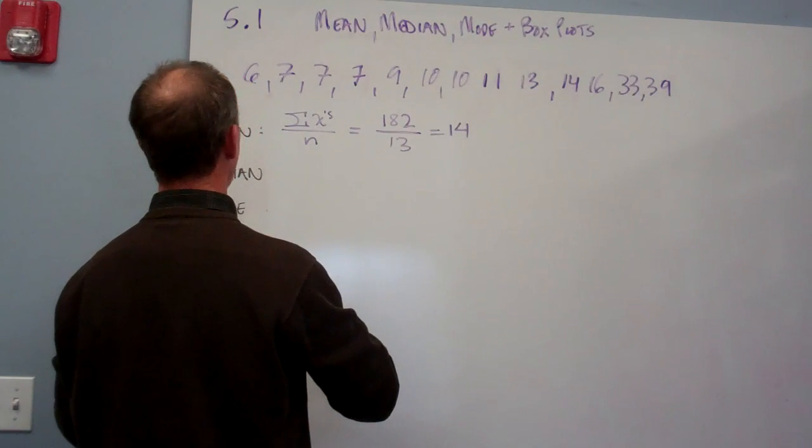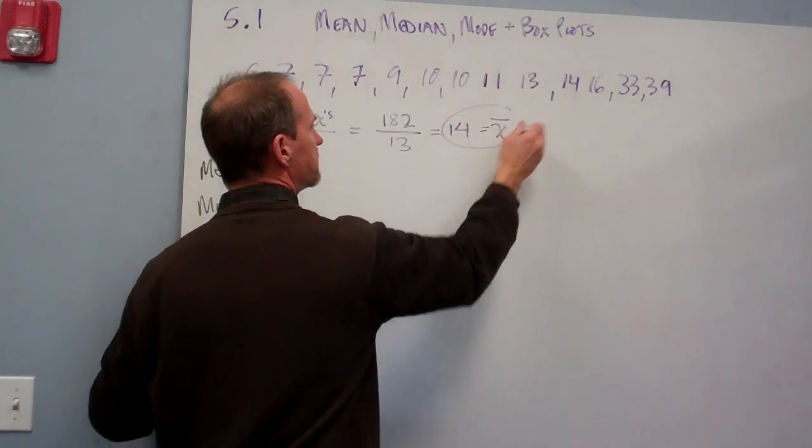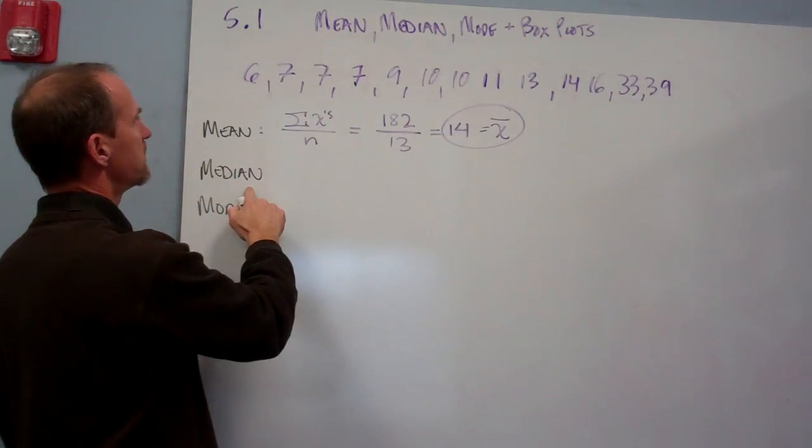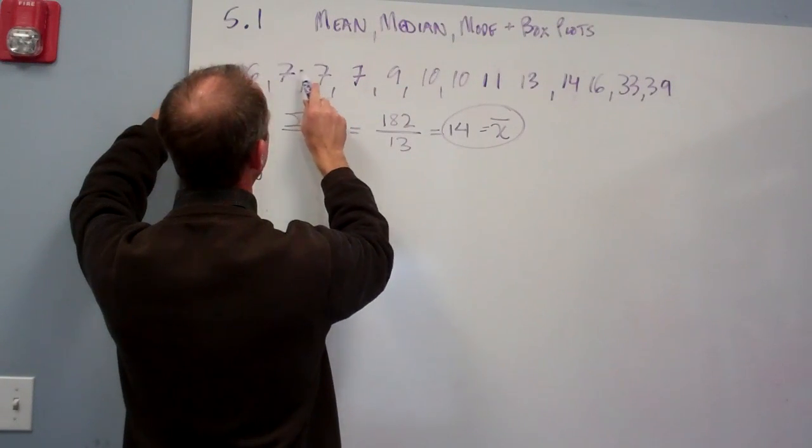The median is the middle value. If there are 13, the middle value is my seventh one: 1, 2, 3, 4, 5, 6, 7. Here is the median value, and that equals 10.